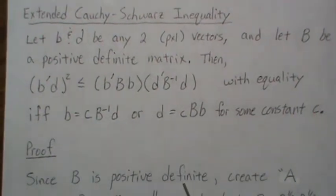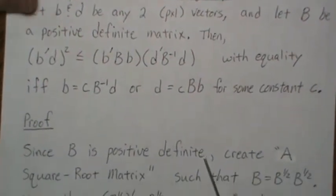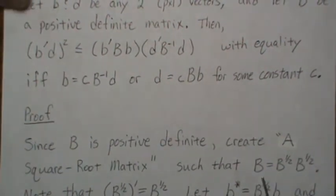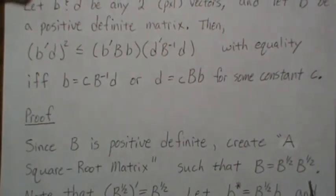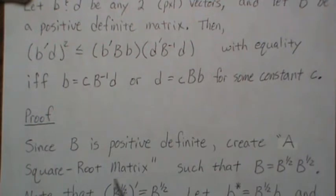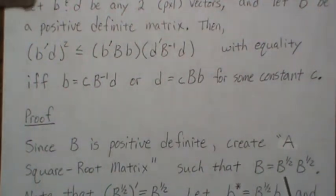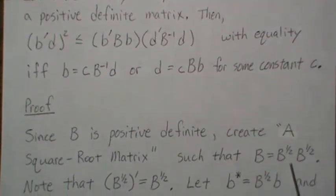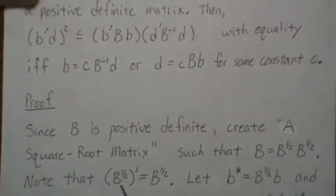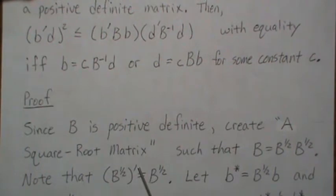So since B is positive definite, we create a square root matrix such that B is equal to B to the 1 half B to the 1 half. And I have a square root matrix in quotes because I have a video called Square Root Matrix which shows this is possible and how to create a square root matrix.